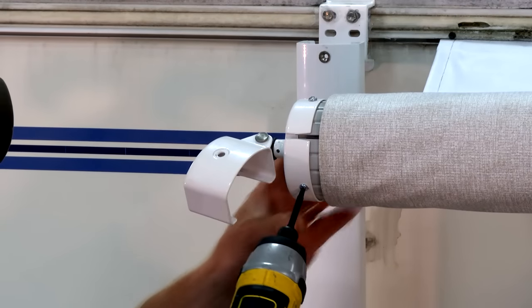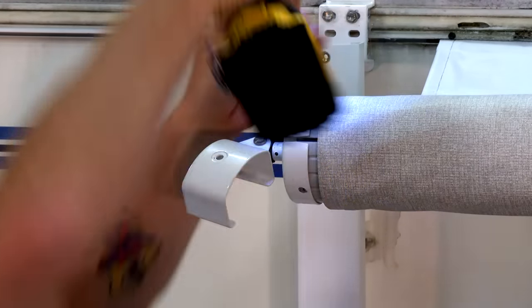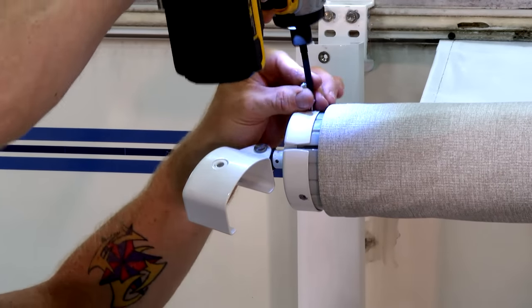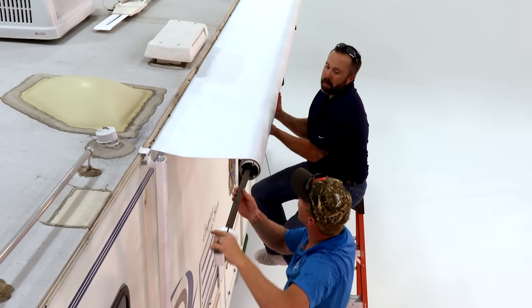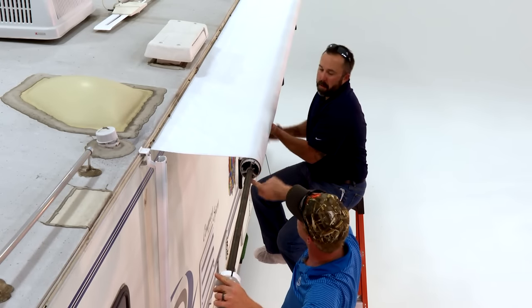With the tension released, remove the tube end cap by removing the three screws with the number two square head bit. Remove the old spring assembly. Take note of the orientation within the tube bracket.